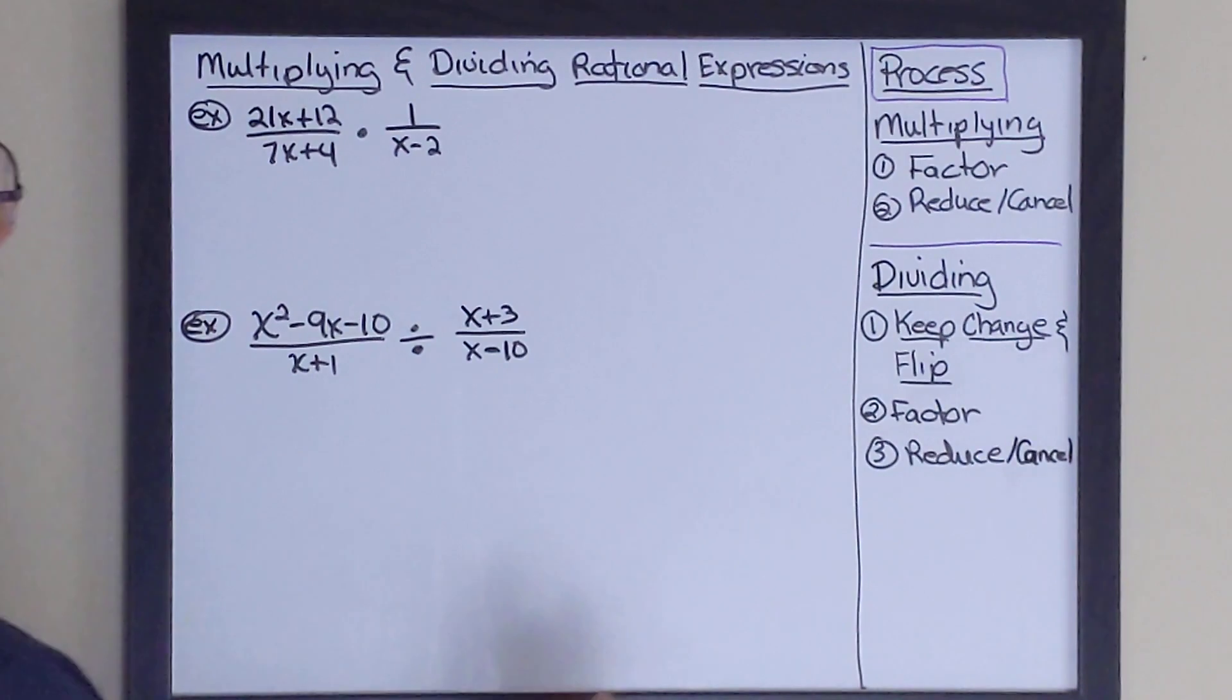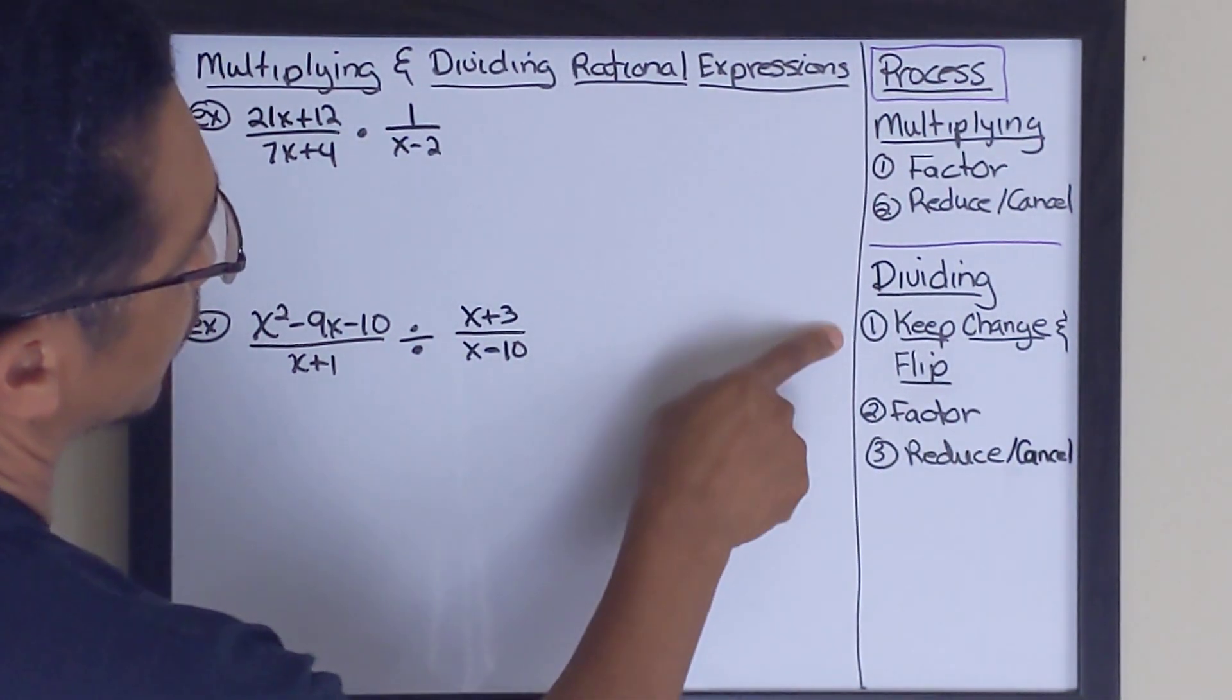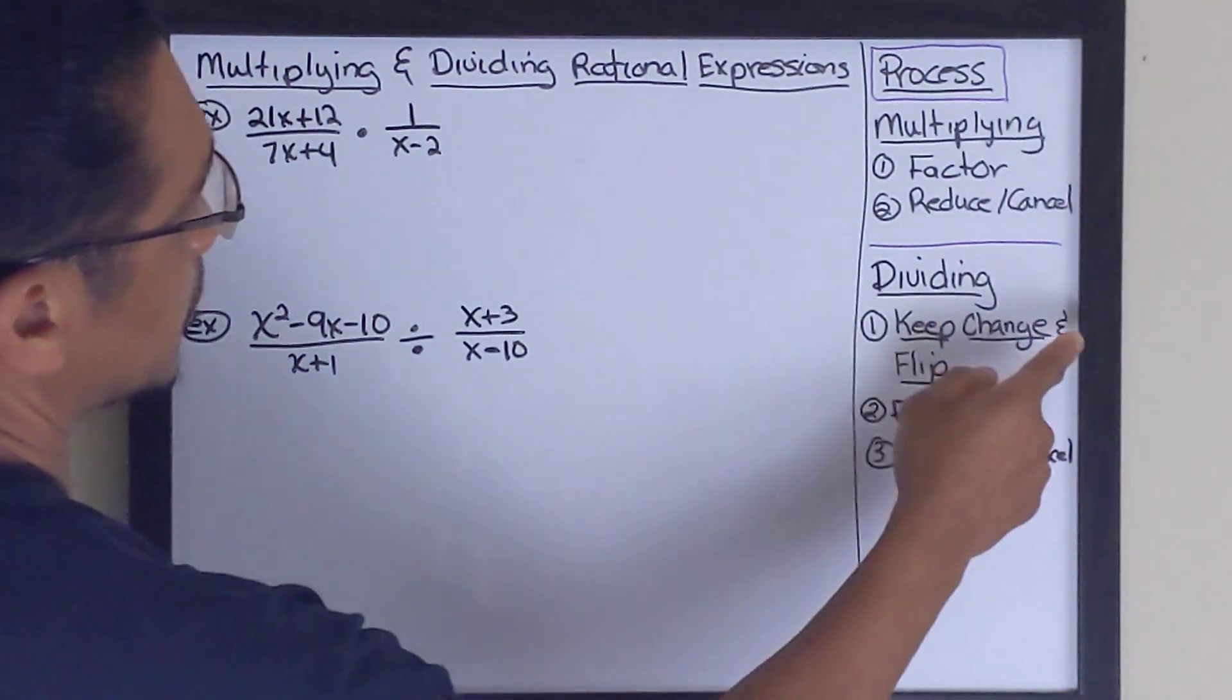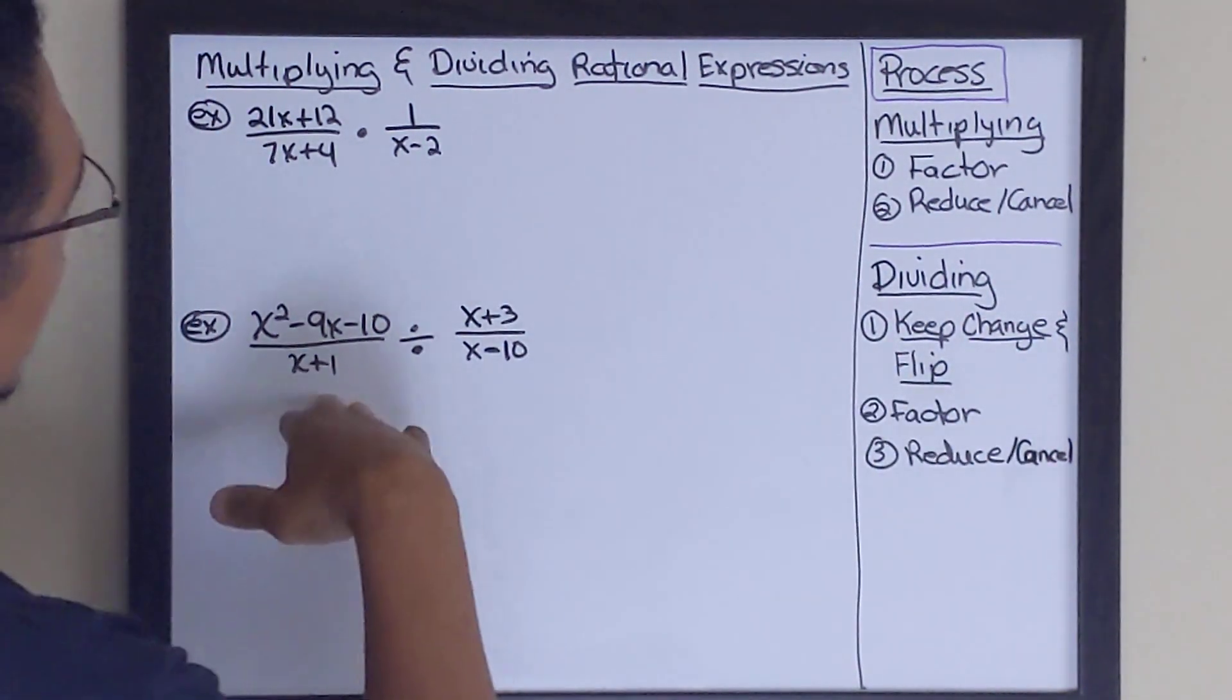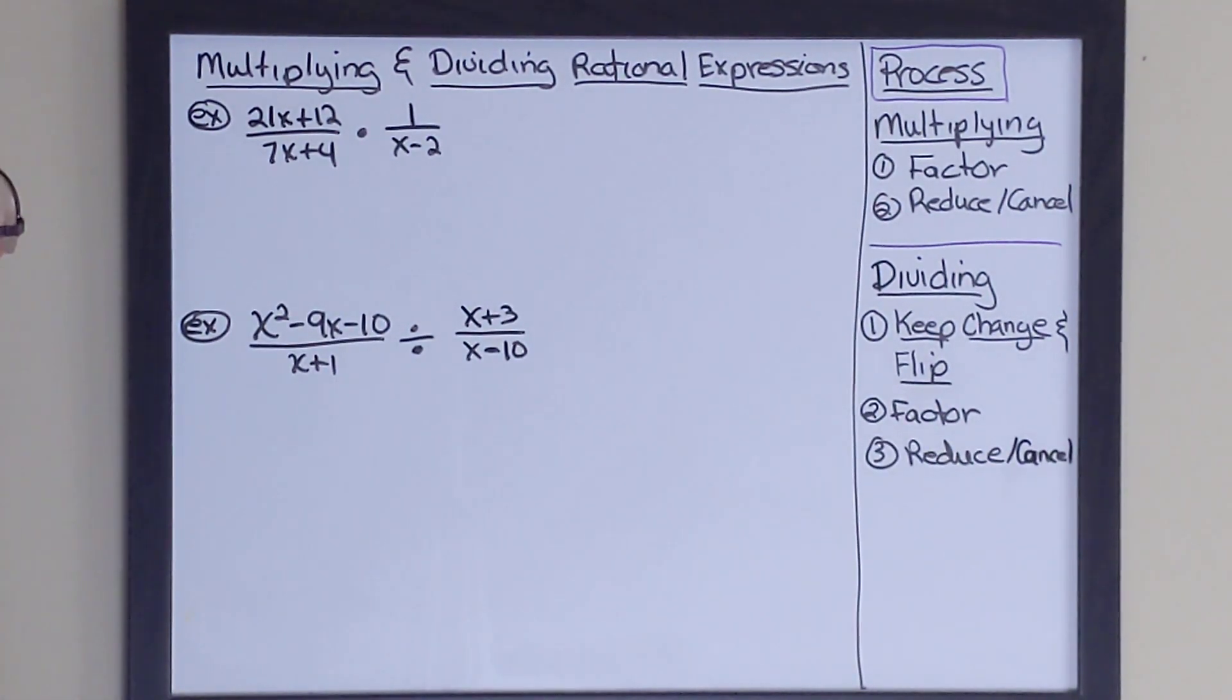And when you're dividing, once again, there's different rules, except here we've got one extra rule, is this thing called keep, change, and flip. And we'll get to that when we solve the division example that we're going to do.